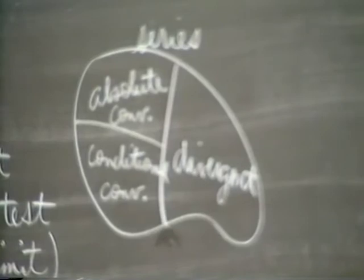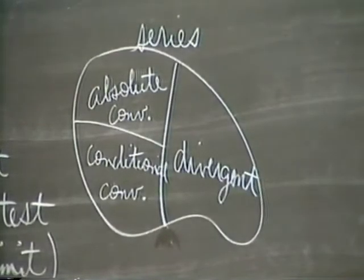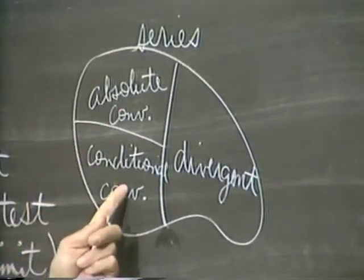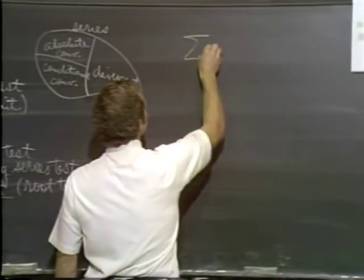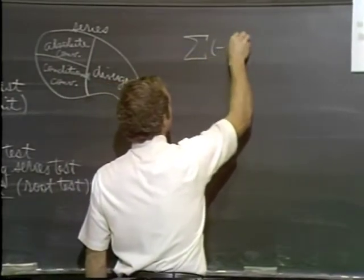So it's a two-pronged question when someone says, does it converge? First to check this, then this, and if neither of those, of course, then you fall over here. Let me give you an example. This is probably very close to, if not exactly, one of your homework problems.